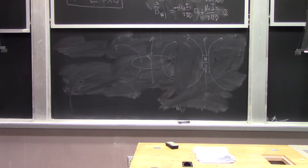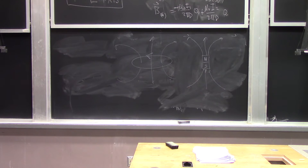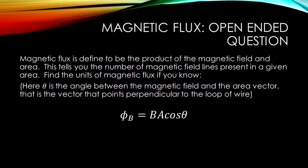This next question pertains to magnetic flux, leading into Faraday's Law. Magnetic flux is the product of the magnetic field and the area — it tells you the number of magnetic field lines passing through a given area. Find the units of magnetic flux, given that Φ_B = B·A·cosθ, where θ is the angle between the magnetic field and the area vector — the vector perpendicular to the plane of the loop.